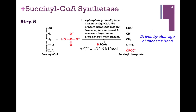The next step is Step 5. We'll start with succinyl-CoA. We're going to displace that coenzyme A cofactor with the phosphoryl group — a phosphate. So we're going to exchange a thioester bond on succinyl-CoA for a phosphoester bond on succinyl phosphate, and here's our coenzyme A coming off. This is driven by cleavage of that thioester bond, which releases a sizable amount of energy.